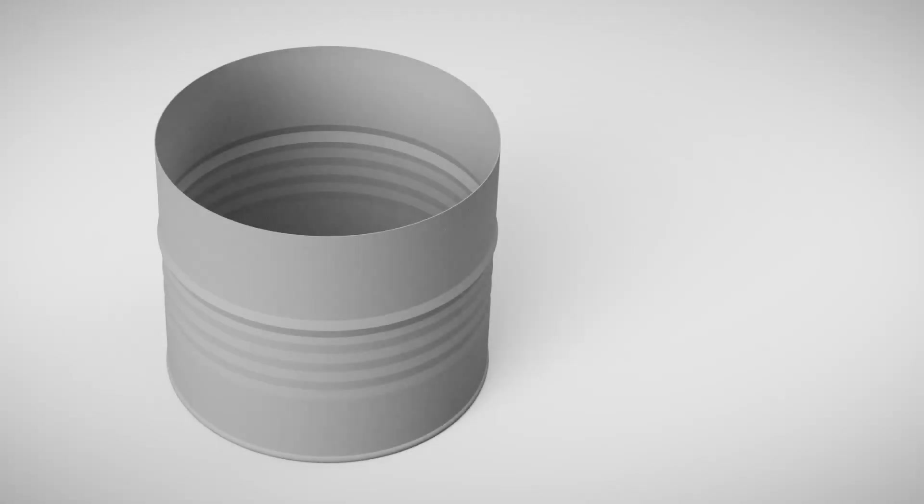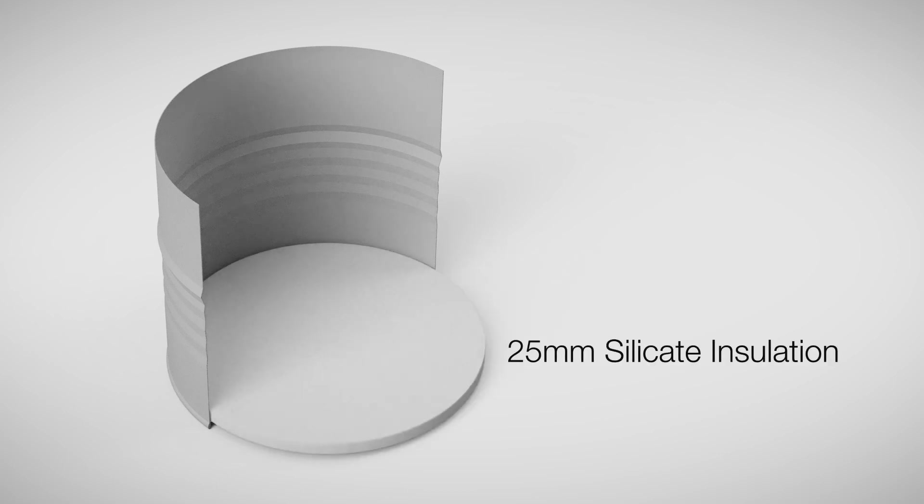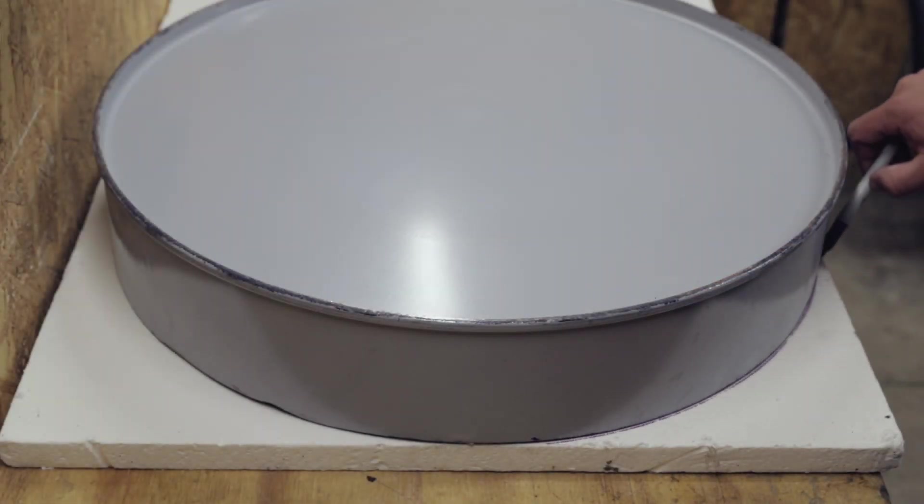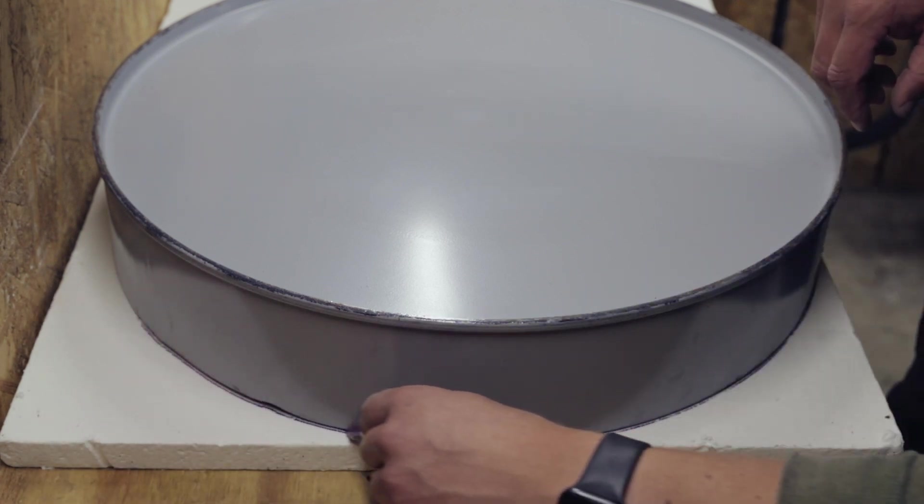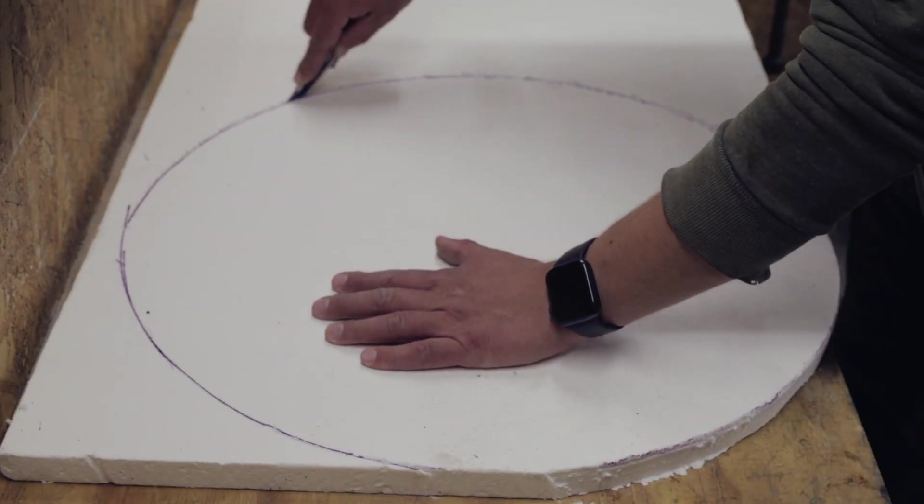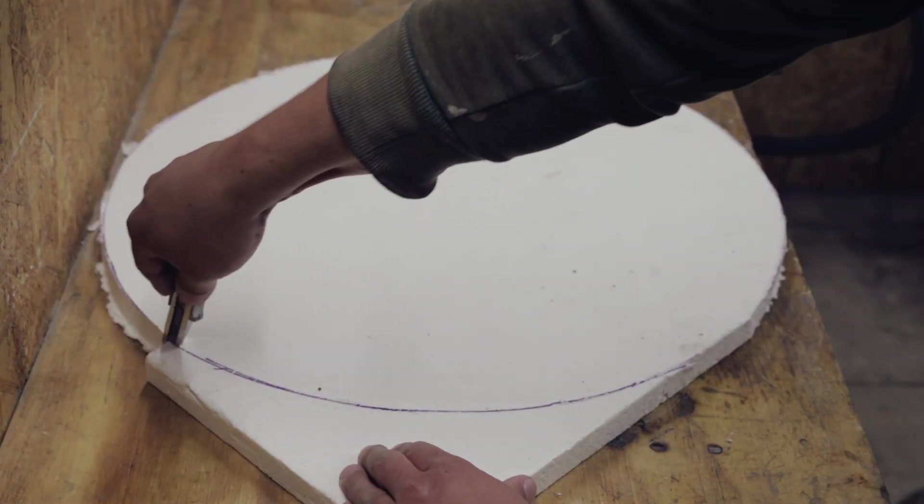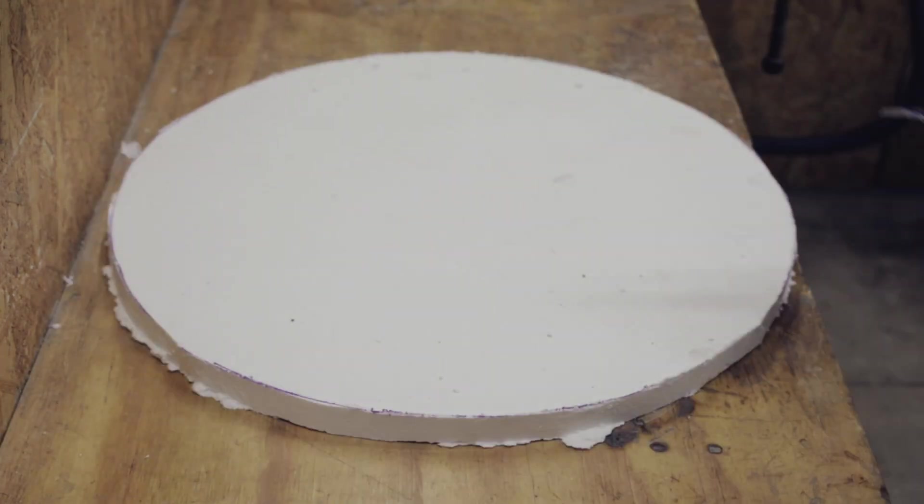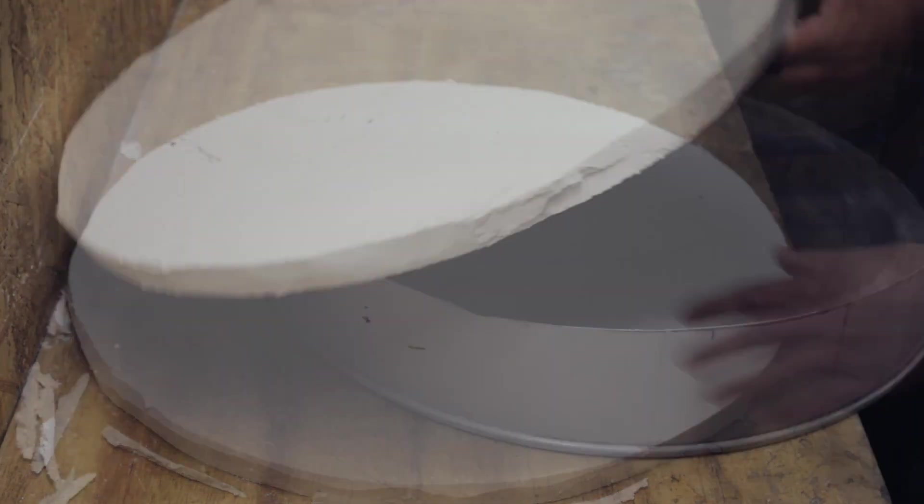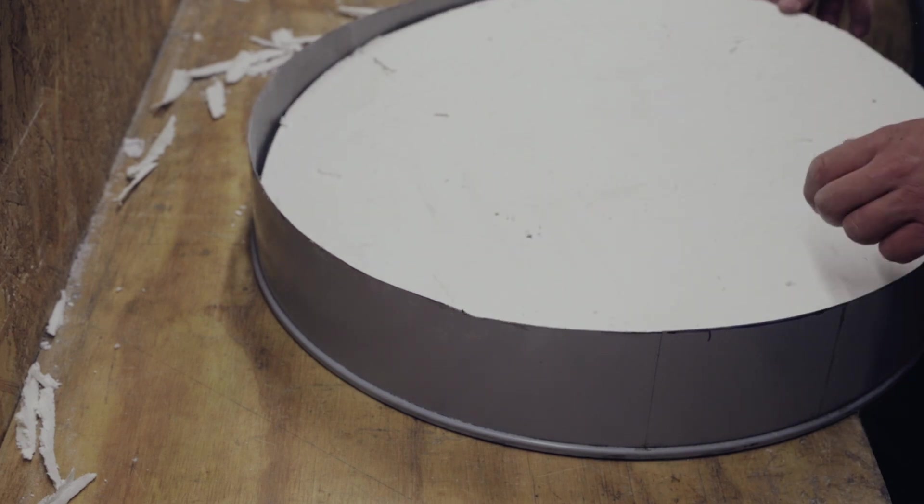The bottom part of the kiln will first be insulated with a 25mm layer of biosilicate, which is cut into a circle from a larger sheet. The biosilicate is a very good thermal insulator but also a bit fragile, so it will be covered by a layer of fire bricks next. The lid is used as a template to draw a circle with a sharpie. This can then be cut out with a sharp knife using several passes. Before moving on, the biosilicate insulation can be test fitted using the lid.